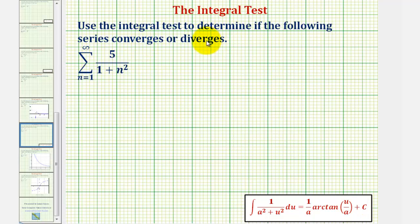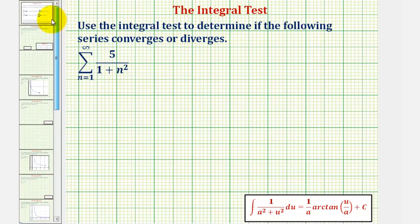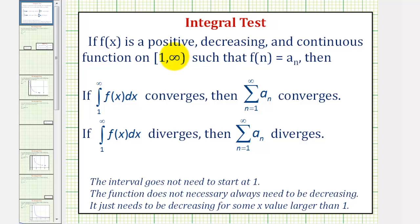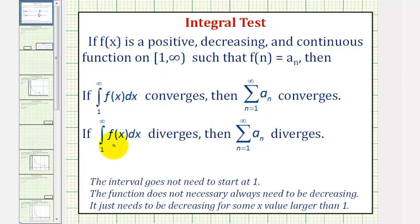We're asked to use the integral test to determine if the following series converges or diverges. For the first step, we want to find a function f of x that is positive, decreasing, and continuous on the closed interval from one to infinity, such that f of n equals a sub n. Then if this integral converges, the series converges, and if this integral diverges, the series diverges.